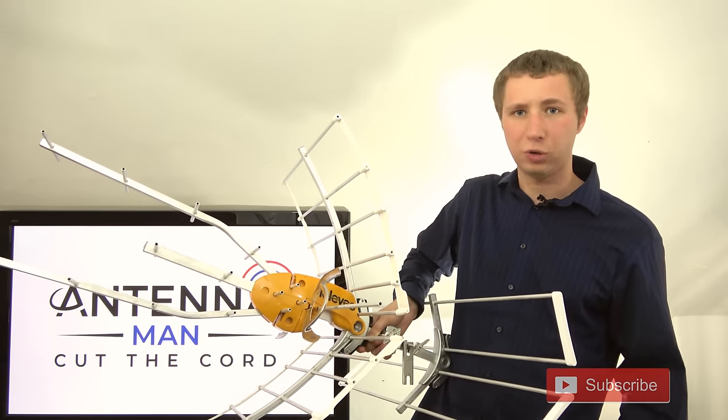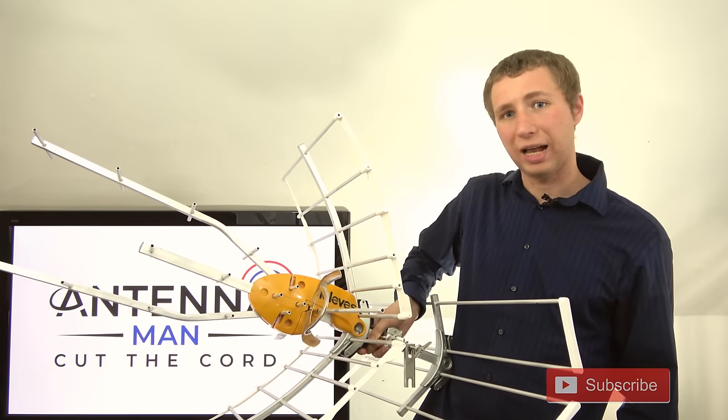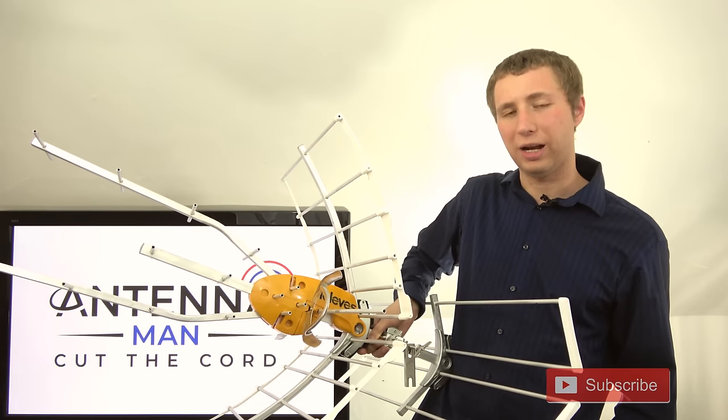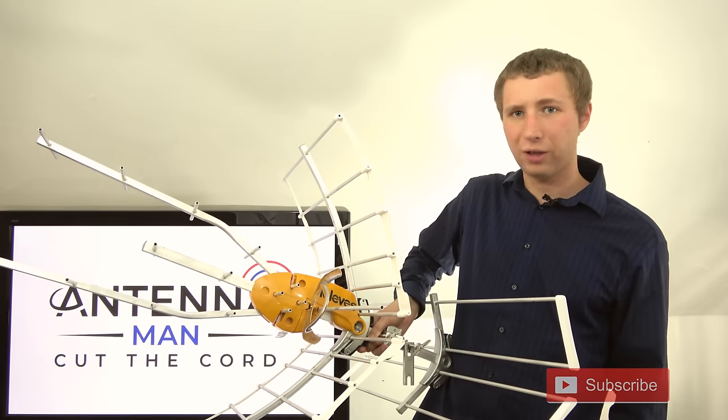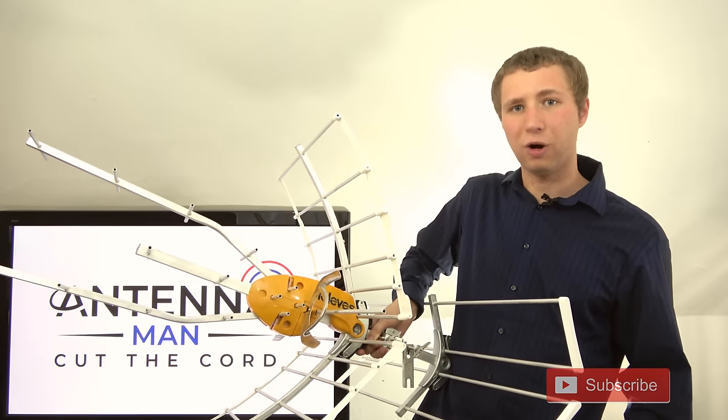That includes the Clearstream 2 Max, the RCA Compact Yagi, the GE Attic Pro, the Channel Master Stealth antenna. Those are all basic small directional antennas, and if you have trouble picking up some stations with them, don't replace them with another small directional antenna. You're going to get similar results. Replace it with a slightly larger antenna.